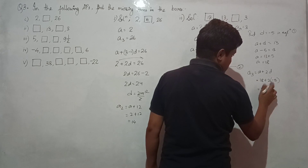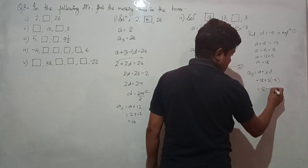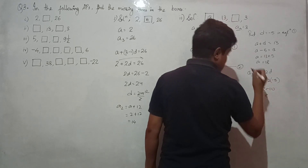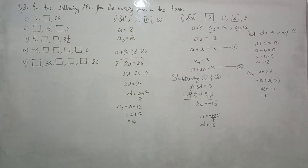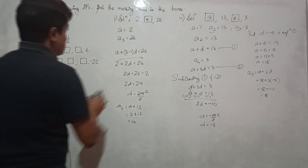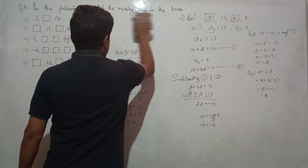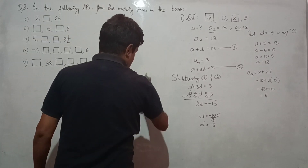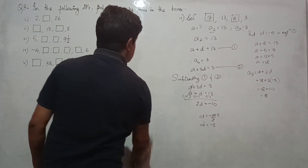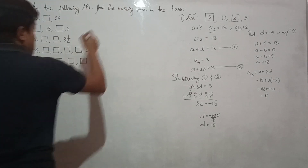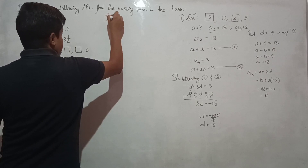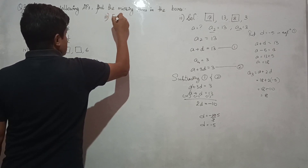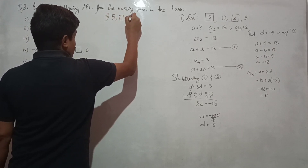18 plus minus 10 equals 8. So the third term is 8. Likewise you can keep solving. Now let us do question number three: 5, box, box, 9 and a half.